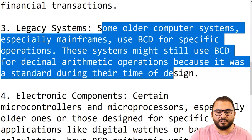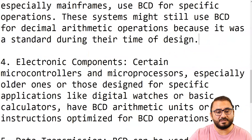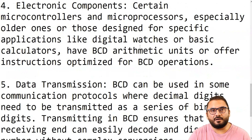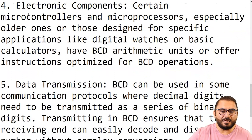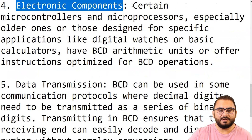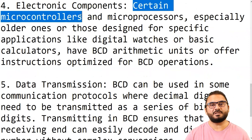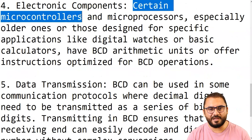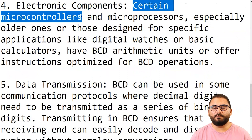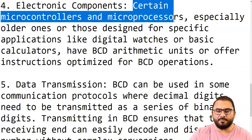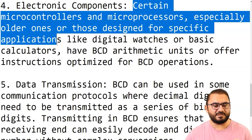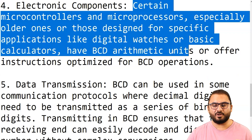BCD is largely a thing of the past, with floating-point numbers being the modern standard. Fourth, electronic components: certain microcontrollers — processors designed for a single purpose, such as controlling an AC unit, oven, or car — and certain older microprocessors designed for specific applications like digital watches or basic calculators have BCD arithmetic units or offer instructions optimized for BCD operations.